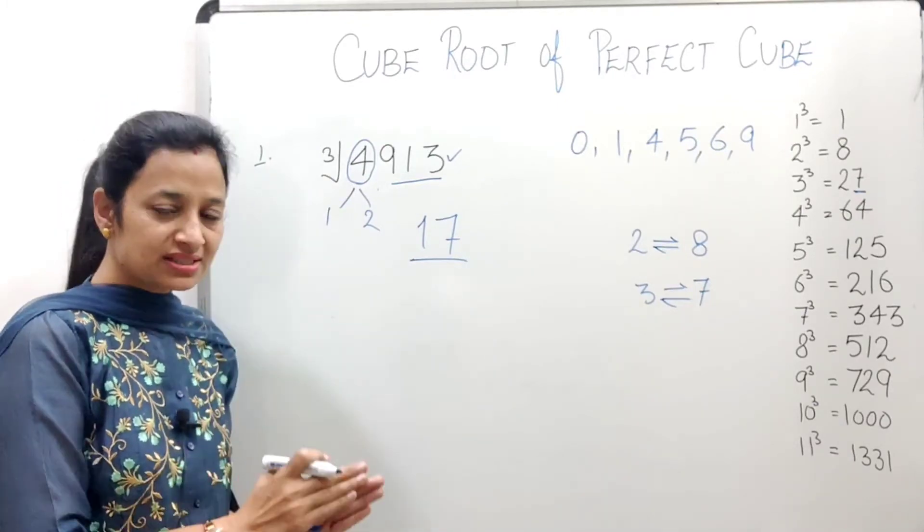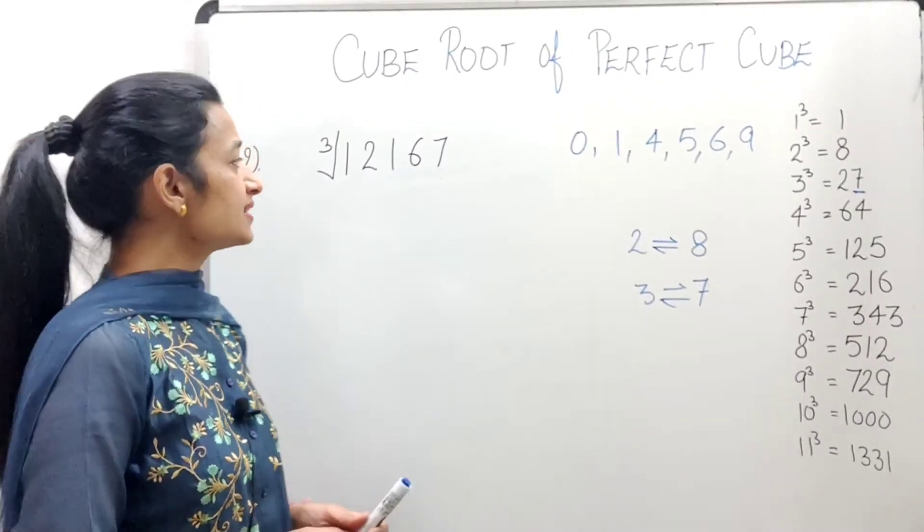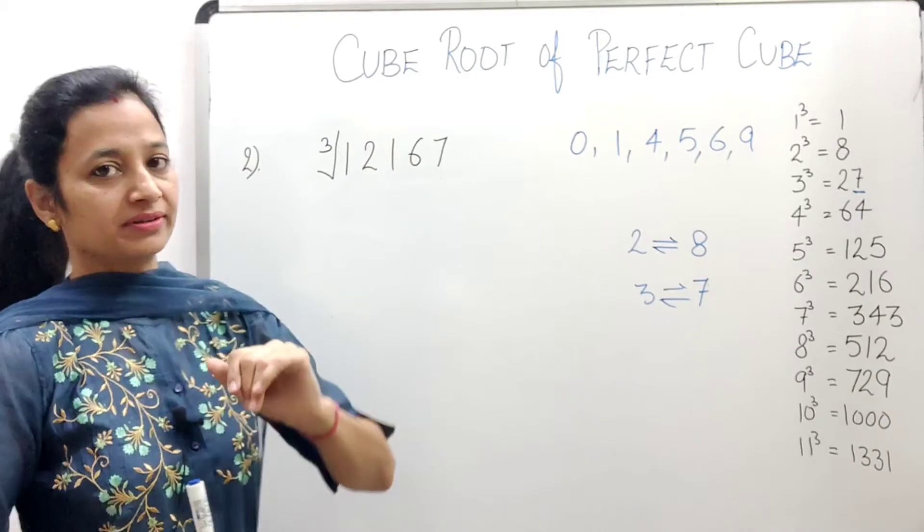So 1. Always, we will take the smaller number in the answer. That means 17 is the cube root of 4913. I hope you understand the steps. Let's take the next example.